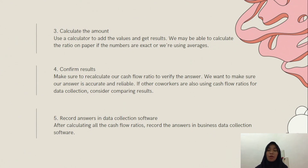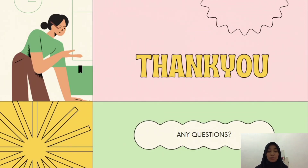Consider comparing results with coworkers who are also using cash flow ratios for data collection. The last step is to record the answers in data collection software. After calculating all cash flow ratios, record the answers in business data collection software. Some businesses use spreadsheets to record these amounts while others write them down. Whichever way the business documents this data, tracking changes in cash flow over time is essential. Thank you for your attention and participation. Assalamualaikum warahmatullahi wabarakatuh.